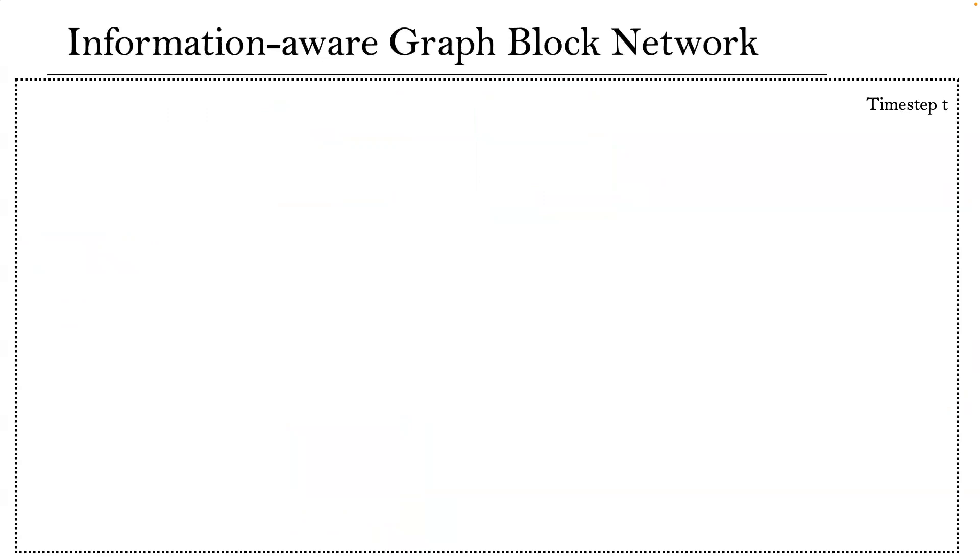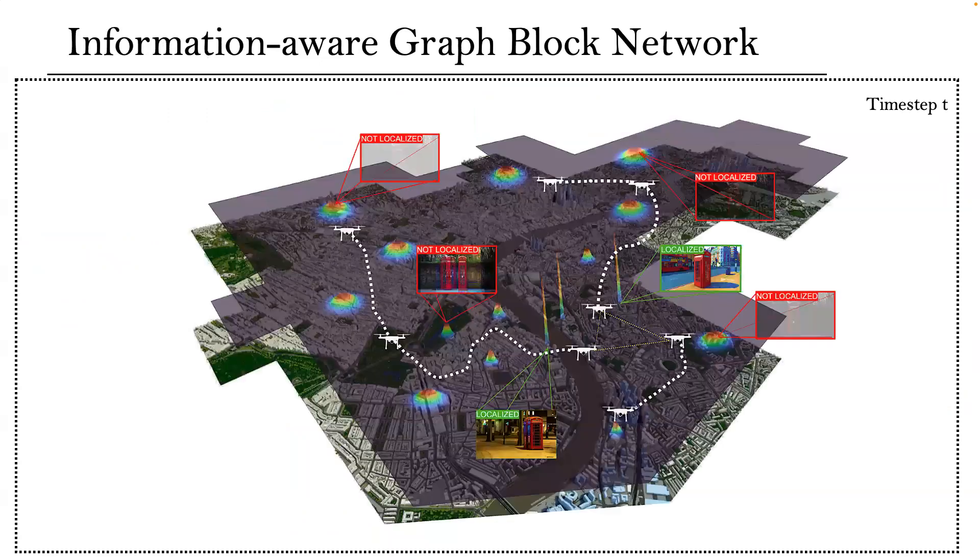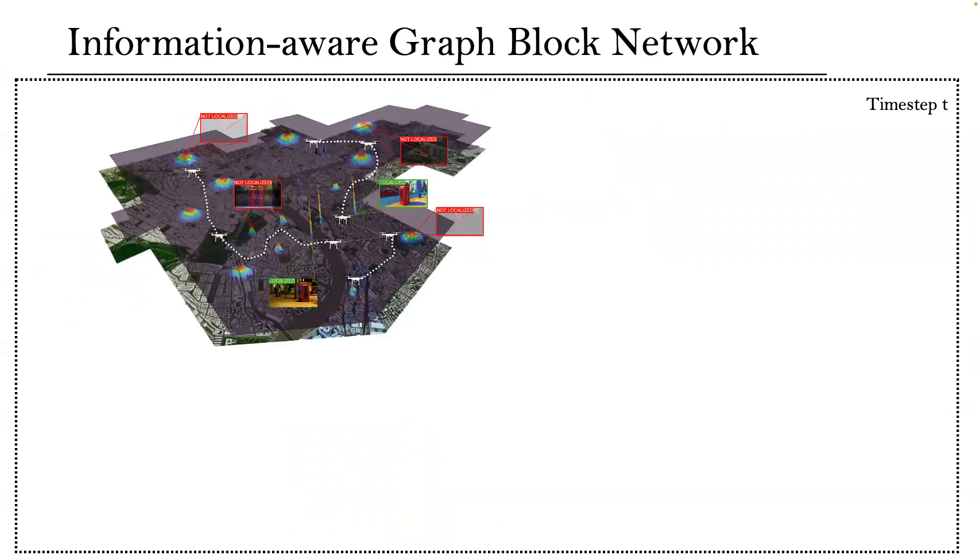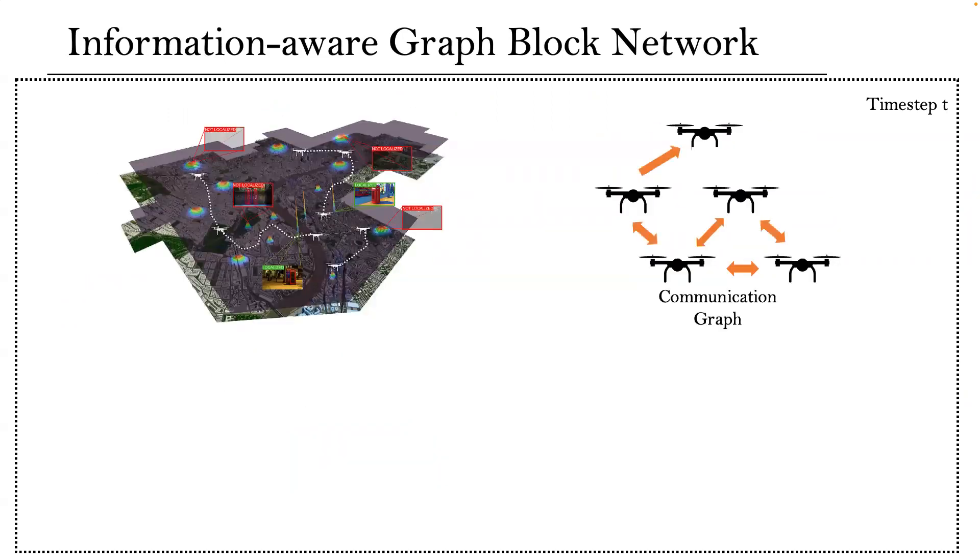To better understand our approach, we freeze the time at time step T. In the real world, the robots have knowledge about their current locations and have an estimate over the hidden state depicted by the Gaussian distributions. Within a communication range, they can exchange information with their neighbors through an underlying communication graph.